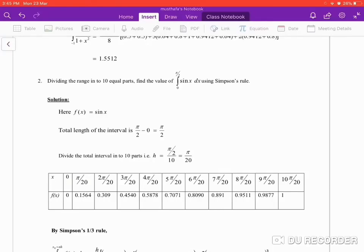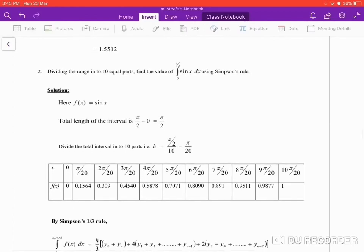Dear students, let us see another example on Simpson rule and trapezoidal rule. Let me read out this question. Dividing the range into 10 equal parts, find the value of integral 0 to pi by 2. The integrating function is sin x dx using Simpson rule.